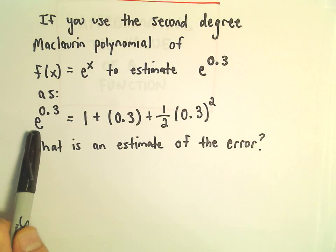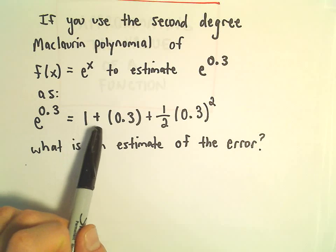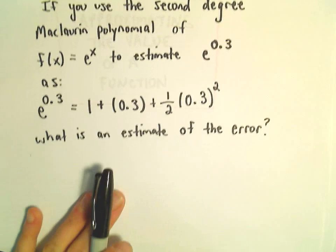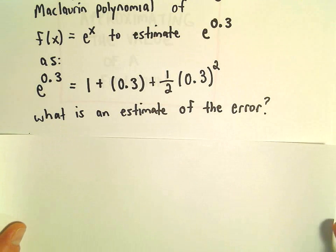And our estimation of e to the 0.3 is going to be 1 plus 0.3 plus 1 half 0.3 squared. We want to know what's an estimate to the error.